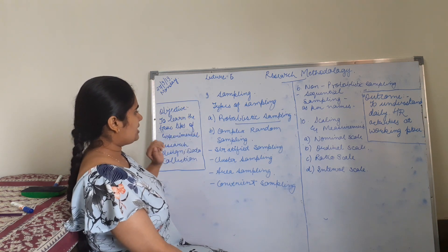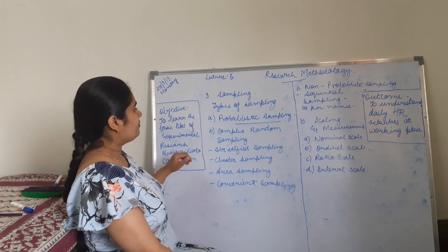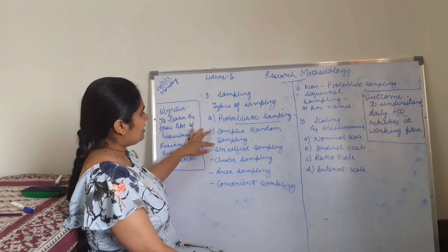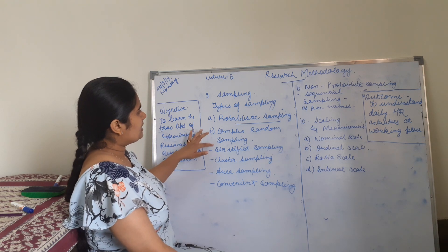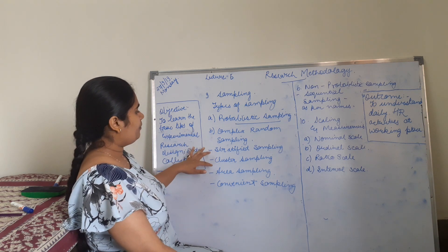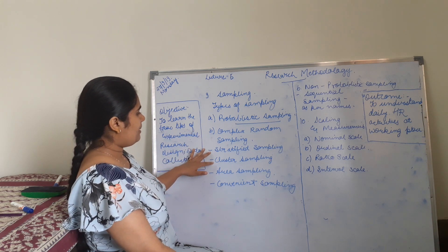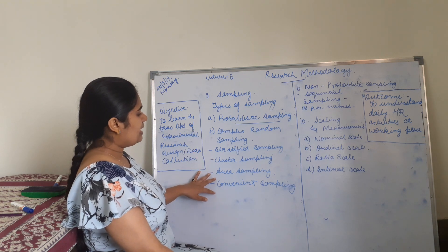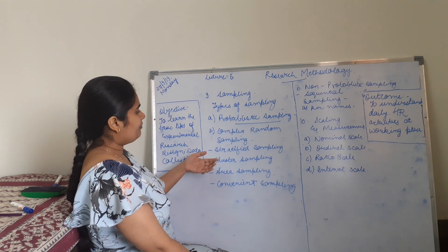Complex random sampling. So in complex random sampling it includes stratified sampling, cluster sampling, area sampling, and convenient sampling.